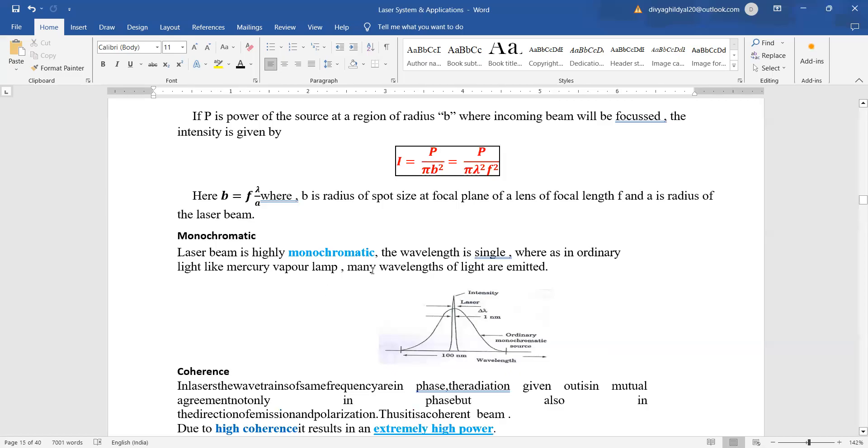Monochromaticity, laser beam is highly monochromatic. The wavelength is single whereas in ordinary light like mercury, vapor lamp, etc., many wavelengths of light are emitted.